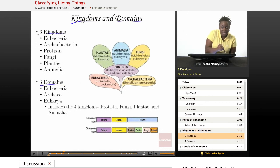We have six kingdoms: the eubacteria kingdom, the kingdom archaebacteria, the kingdom protista, the kingdom fungi, the kingdom plantae, and the kingdom animalia. We'll discuss each of these kingdoms individually.